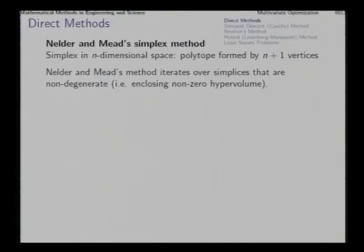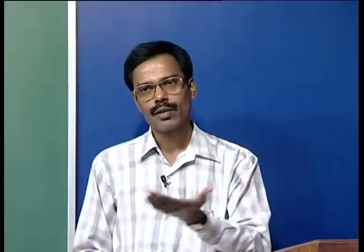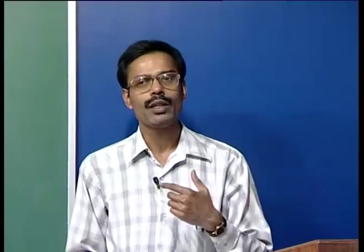Nelder and Mead's method iterates over simplices that are non-degenerate. To begin with, we must give it a simplex which is non-degenerate, that is all the n+1 vertices do not fall in a single hyperplane. The typical iterative step of the simplex method ensures that at one step, one vertex of the simplex will be replaced by a new vertex. Like that, the simplex keeps on changing iteration by iteration, travelling towards a minimum point of the function. Framing initial n+1 vertices which form a non-degenerate simplex is actually not very difficult.